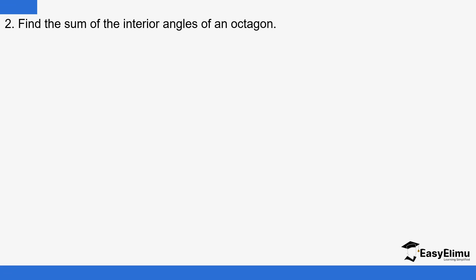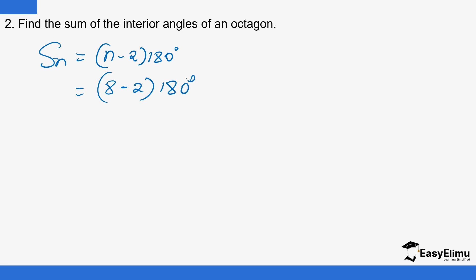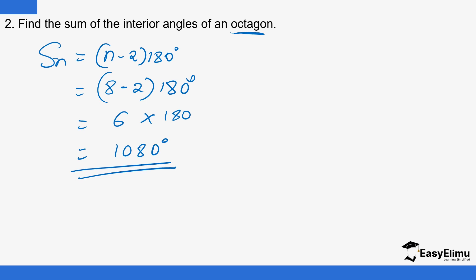Find the sum of the interior angles of an octagon. Here we simply use the formula: Sn = (n − 2) × 180. An octagon has 8 sides. So: (8 − 2) × 180 = 6 × 180 = 1080°. The sum of the interior angles of an octagon is 1080°. Just as simple as that.